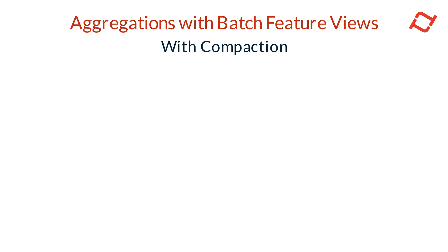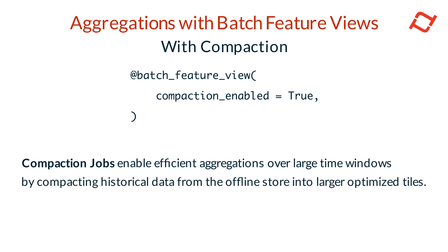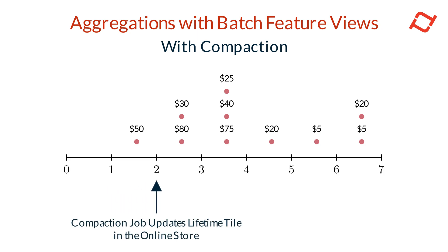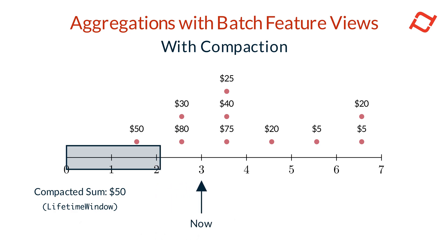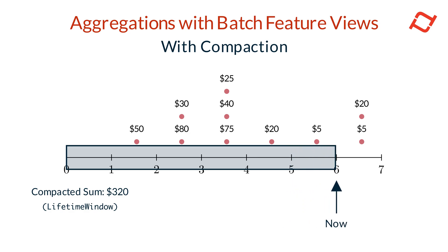When handling aggregations with large time windows such as lifetime aggregations, Tekton provides an efficient way to compute and serve data through compaction jobs. These jobs compact historical data into larger optimized tiles. To enable compaction, set the compaction enabled parameter of a batch feature view to true. Once enabled, Tekton runs compaction jobs on a predefined schedule, typically daily. A batch process reads the entire range of data for the aggregation window from the offline store, performs the necessary aggregations, and updates the compacted tile in the online store for each entity. Thanks to compaction, querying these aggregations has constant time complexity, significantly improving performance for lifetime data.